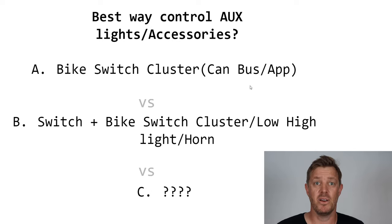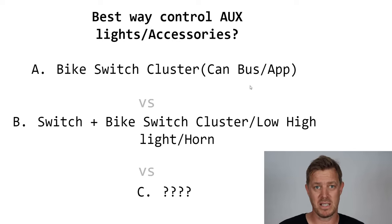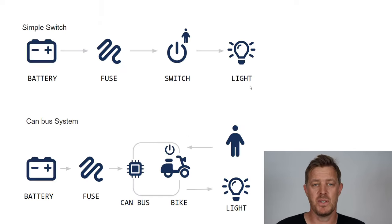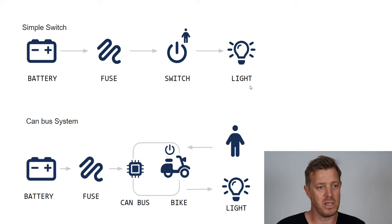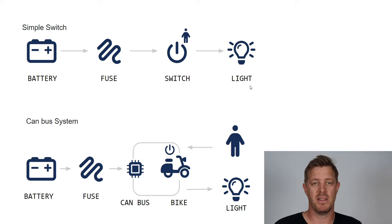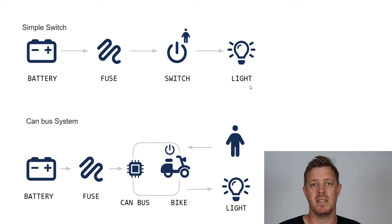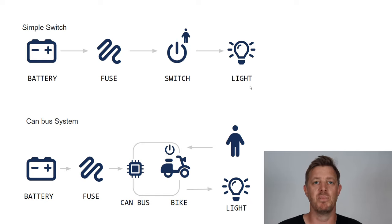Maybe there's another option I don't know about — that's why I'm asking you. The first concept is essentially pretty simple: it goes from a battery to a fuse, and the fuse goes to a switch, and then the switch goes to the light. That's the most simple setup you can have.